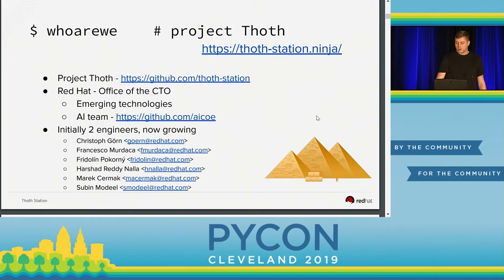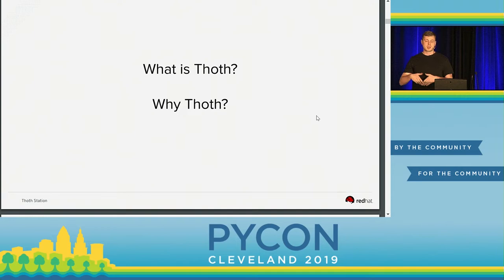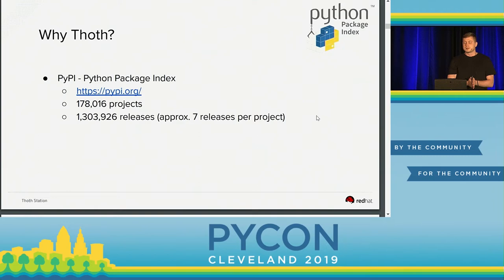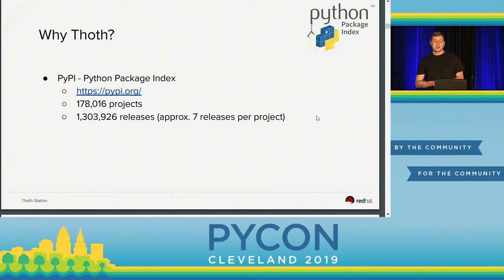Now let's talk about what Thoth actually is and why we developed it. If you take a look at PyPI, the Python Package Index, you can find something like 170,000 projects. Each of these projects have releases, and last time I checked it was 1.3 million releases. You can say it's quite a huge code base.